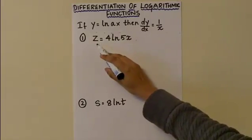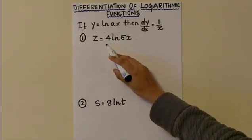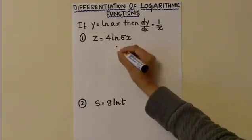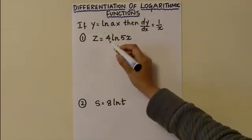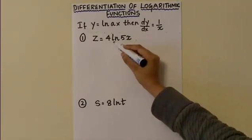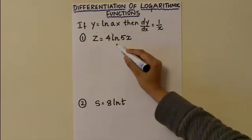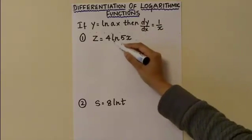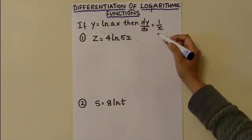The first example is z equals 4 ln 5x. We can see that ln 5x has a coefficient of 4. When ln 5x is differentiated, no matter what is the value of a, your differentiation of this logarithmic function is 1 over x.